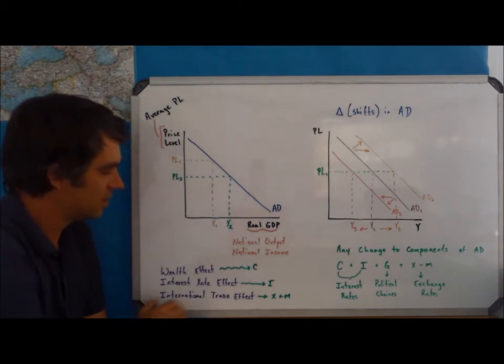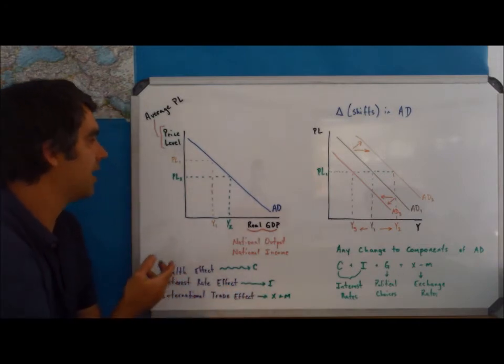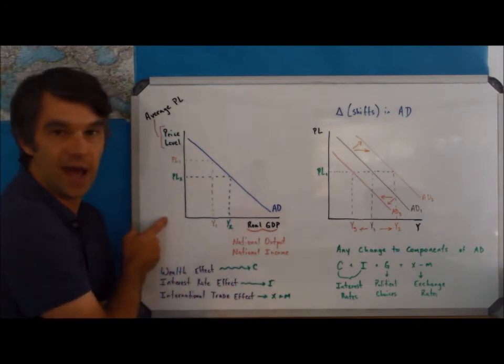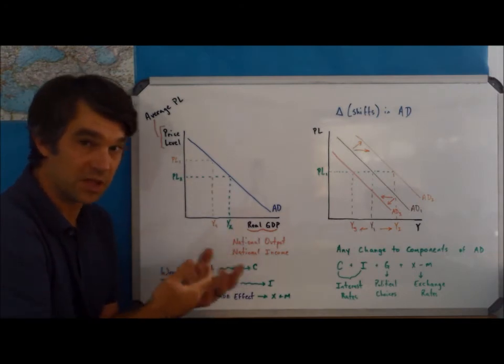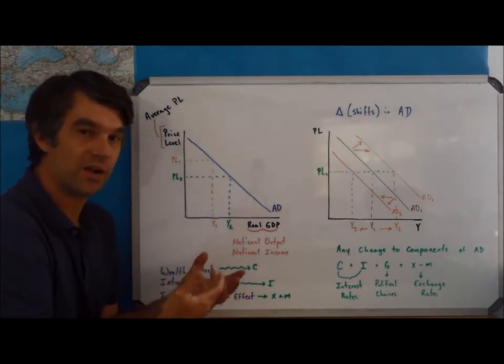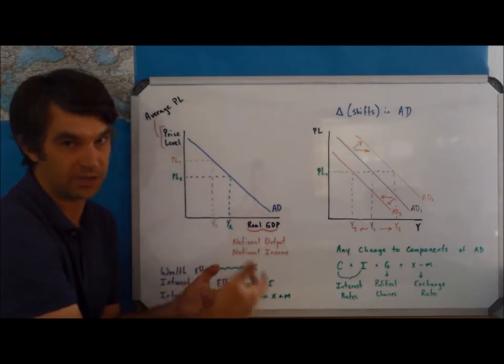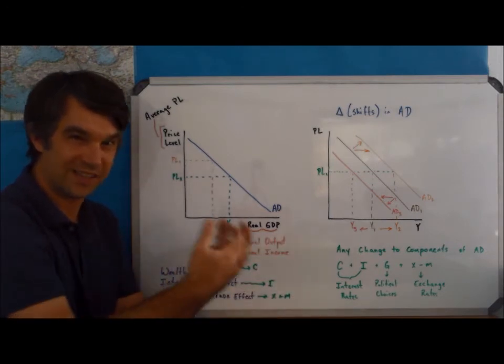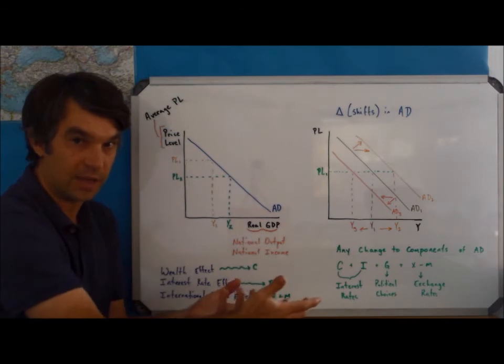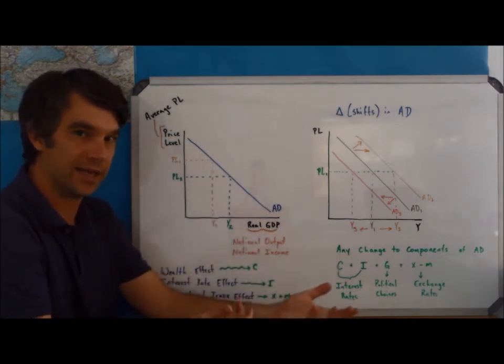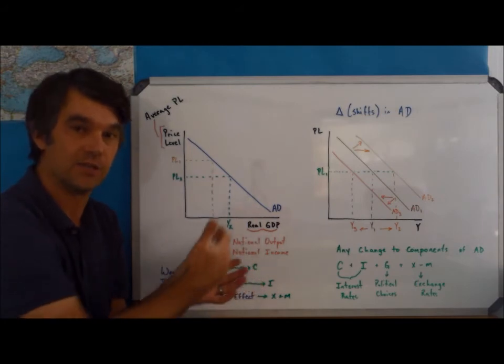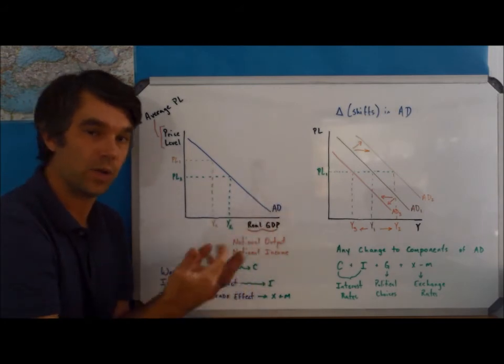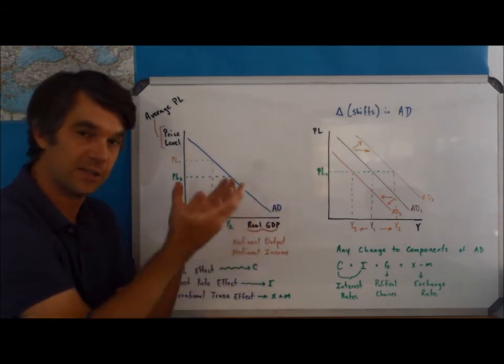The interest rate effect is mostly going to affect investment. Let's see why. As price levels come down, consumers are going to be able to buy most of the things they want and they are therefore going to save larger amounts of their money. When they save their money, they save it in the bank, which means banks have more money to lend out, which means that the supply of the money to be lent out is going to increase.